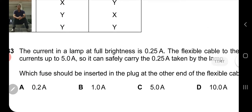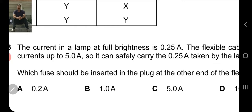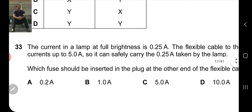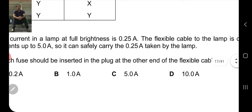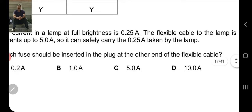Which fuse should be inserted in the plug at the other end of the flexible cable? The question is asking that the lamp which has full brightness requires 0.25 ampere. When it gets 0.25 ampere current, that's enough for it. The cable can carry up to 5 ampere. Now we have to choose which fuse should be inserted in the plug. Remember one thing: the fuse you choose is always chosen with reference to the appliance. You're not protecting the cable here, you're protecting the lamp.